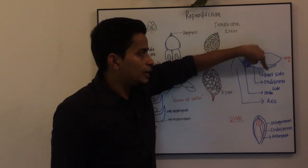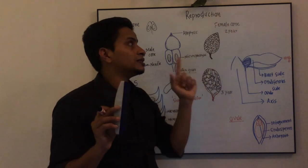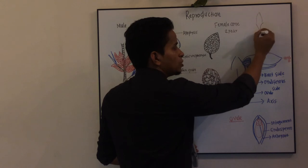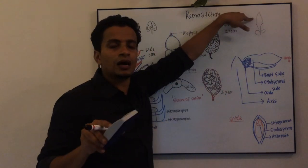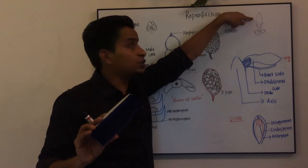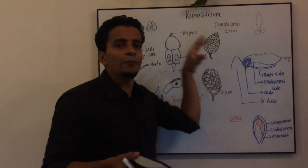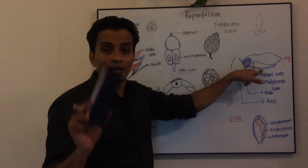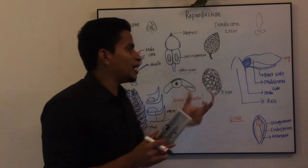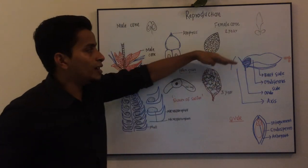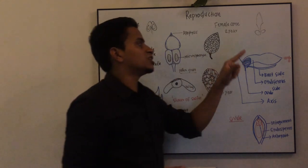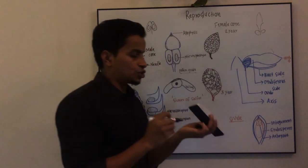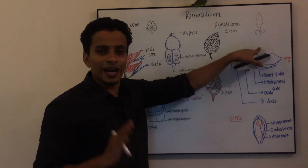How does a single megasporophyll look? A megasporophyll has two parts. There is a structure on the megasporophyll — a leaf which carries the megasporangia or ovule. The part that bears the ovule is called the ovuliferous scale, and there is also a protective part called the bract scale.